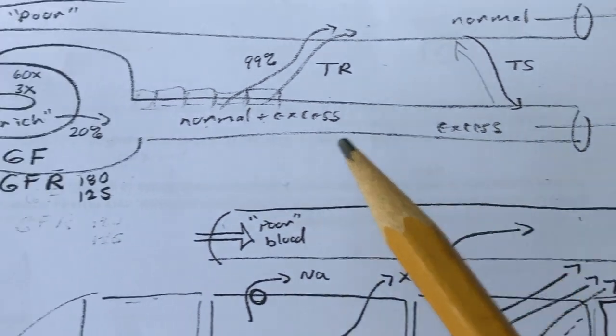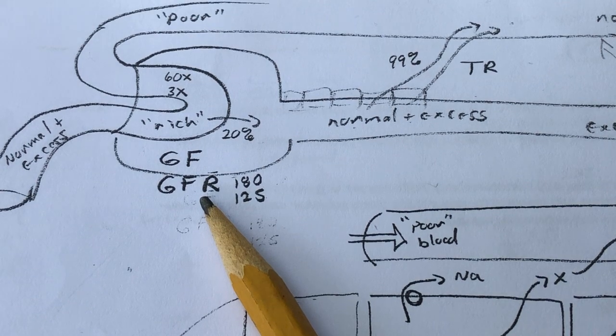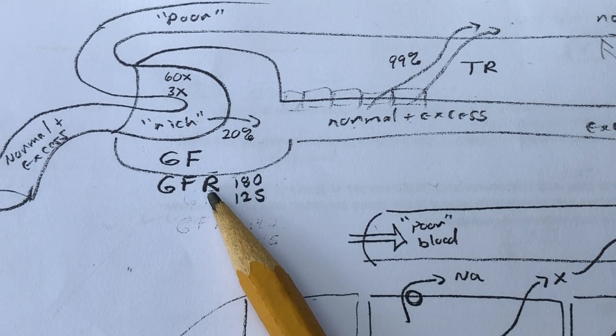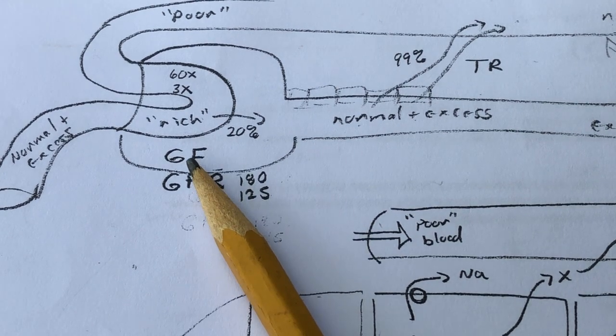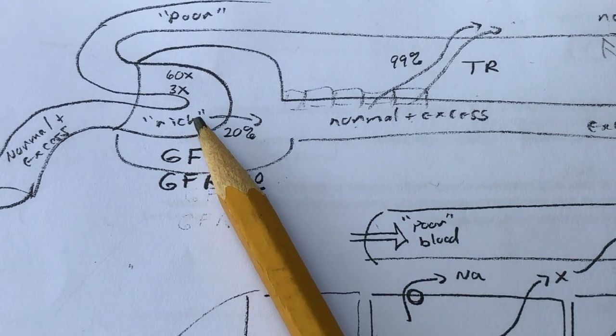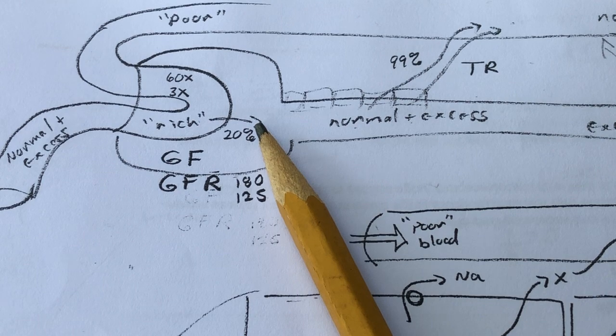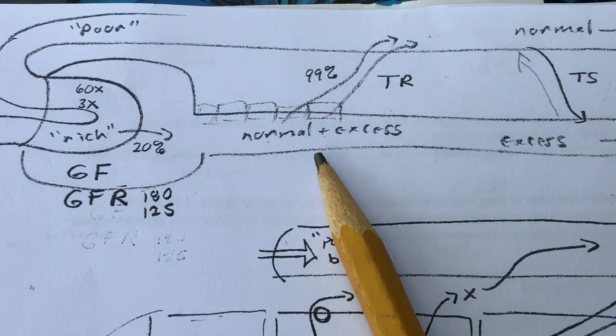So the 1.5 liters of urine represents approximately one percent of the glomerular filtration rate on a daily basis. As far as the effect of glomerular filtration, it is to take things out of the blood and put it into the filtrate.